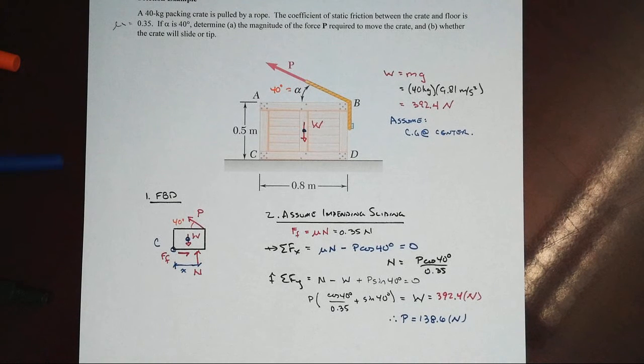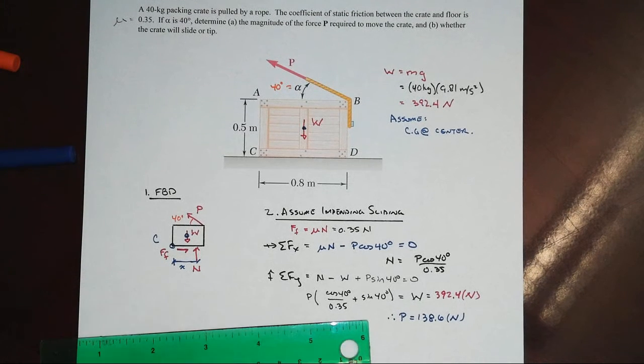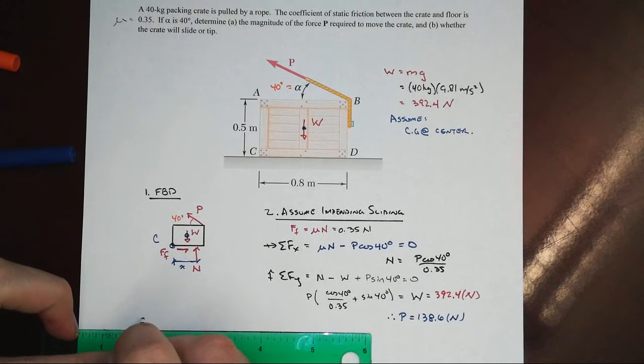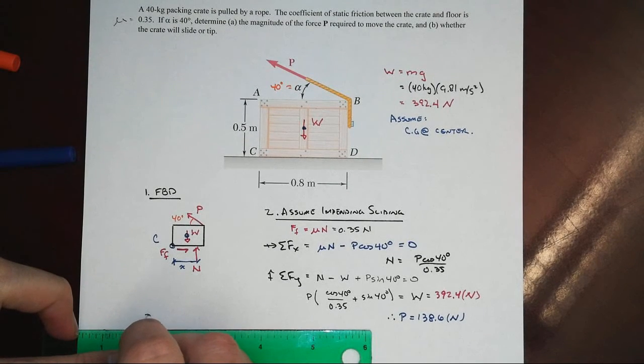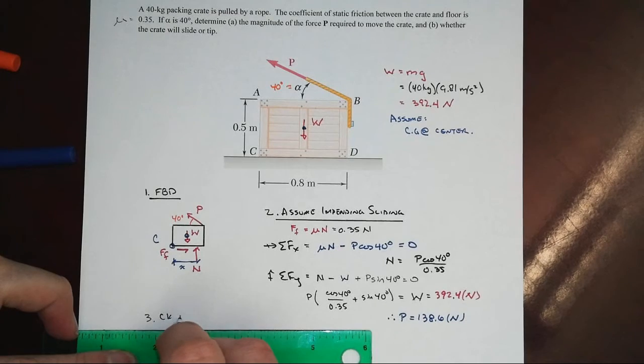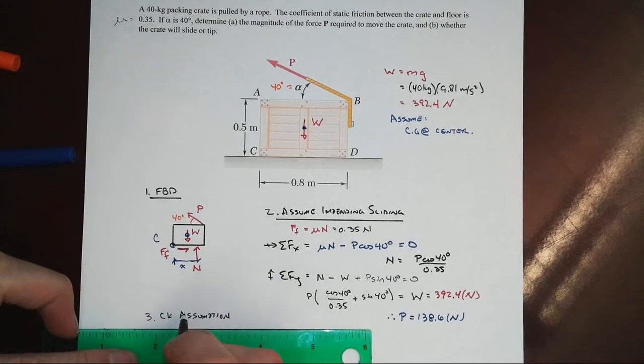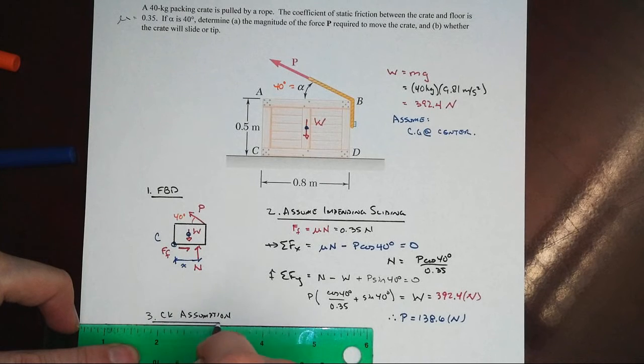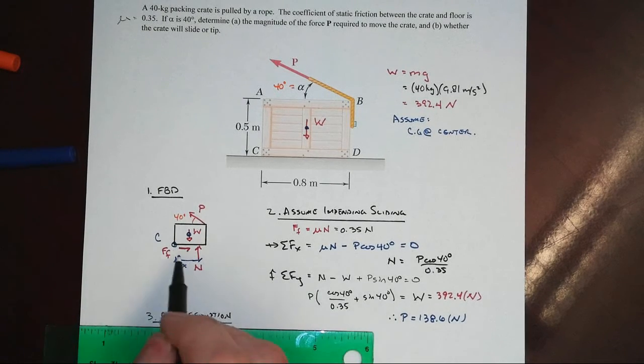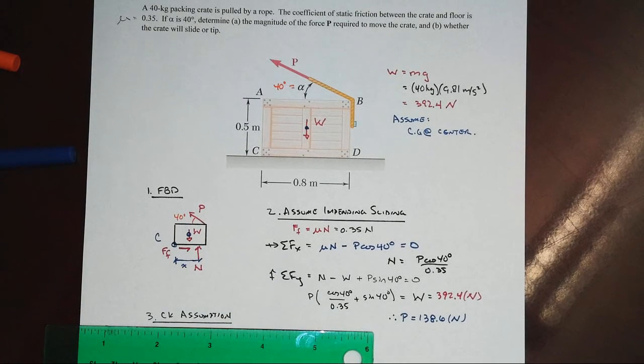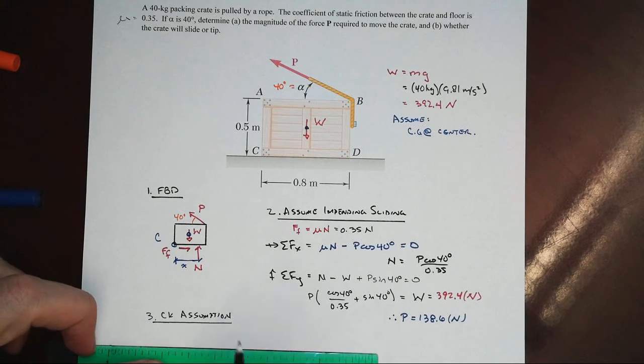But we need to check our assumption of whether we really have sliding or not. And so we'll do that by using our third equilibrium equation, which will be sum of moments about some convenient point, which would be C that we want to do that about. And so we're going to need a normal force value to do that. So let's go ahead and calculate that.